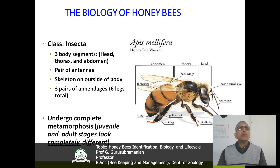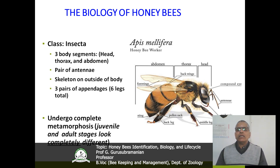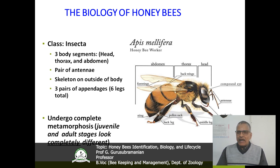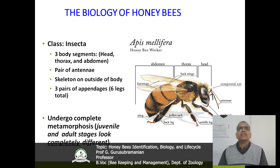The honeybee is coming under the class insecta — it is an insect. What are the prime features that designate an insect? Whenever you are talking about an insect, it has head, thorax and abdomen, a pair of antennae, and six legs. That is why it is known as Hexapoda — hexa means six, poda means legs — a six-legged animal.